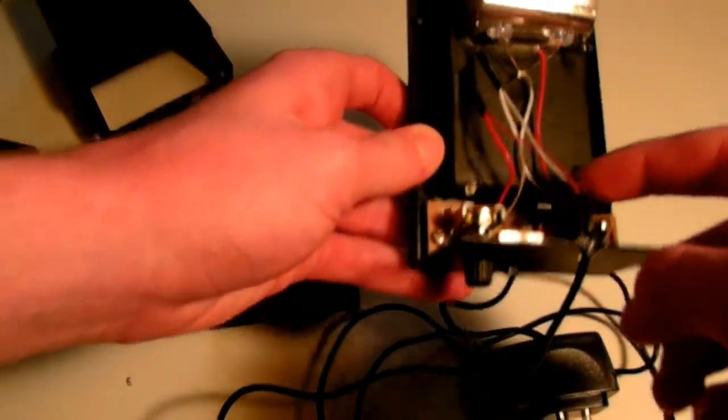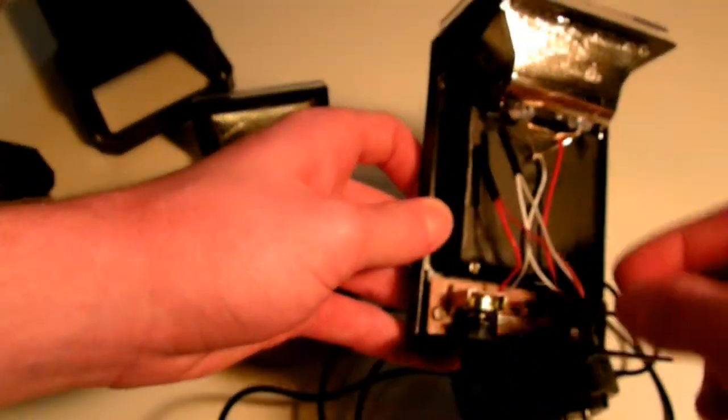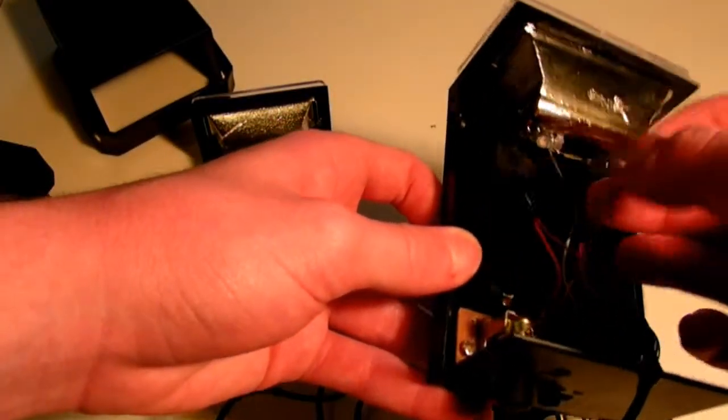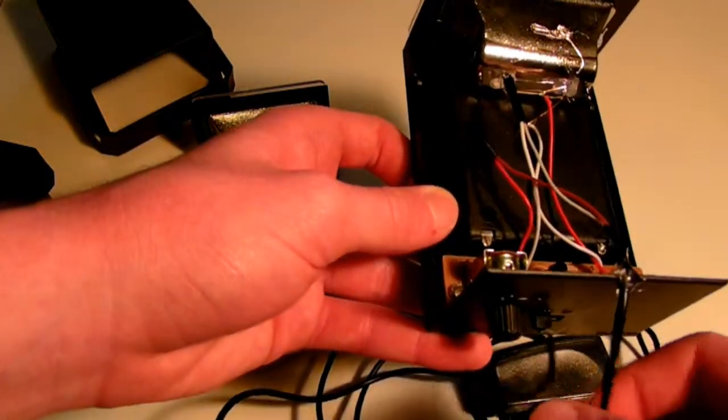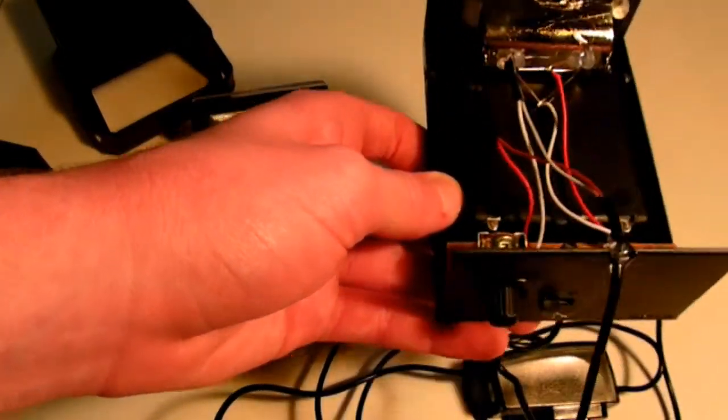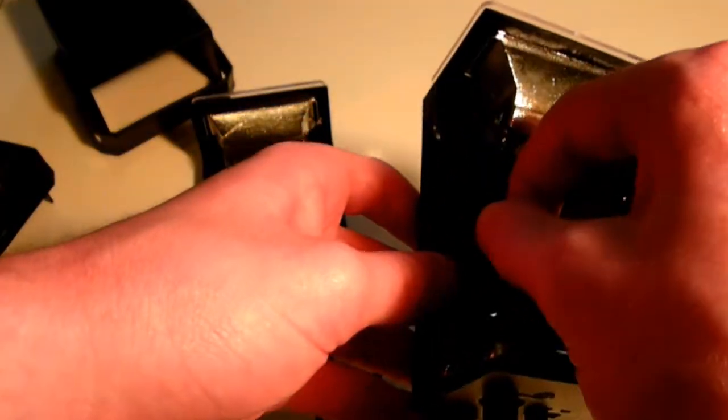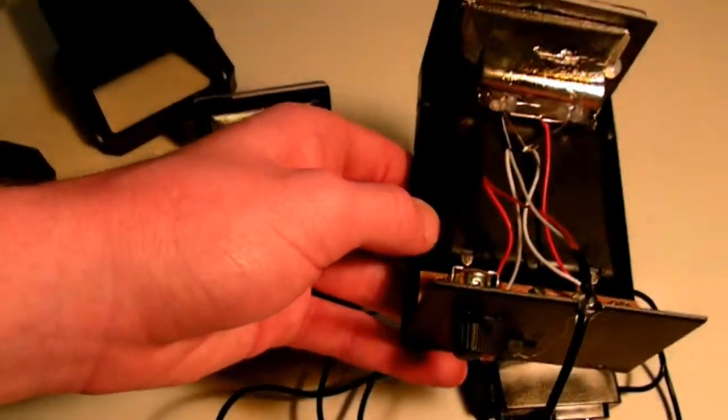You want to connect the white wire from the strobe light to the white wire of your plug, and the red wire of the strobe light to the red wire of the plug.